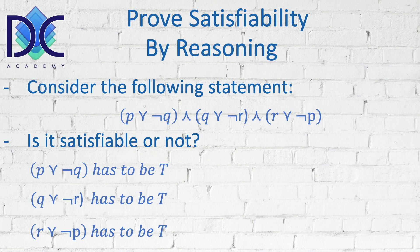Let's suppose that P is true, Q is false, and R is true. P∨¬Q: P is true, ¬Q is true, so it is true. R∨¬P: R is true, ¬P is false, but R∨¬P is then true. Now Q∨¬R: Q is false, ¬R is also false, so Q∨¬R is false, which leads to the whole statement being false. This is not a solution to this statement.